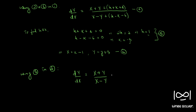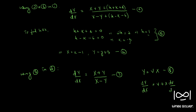Let's call this equation 7. Equation 7 is a homogeneous equation, as dY/dX can be written as a function of Y/X — dividing numerator and denominator by X confirms this. So we put Y equal to vX, calling this equation 8. Differentiating equation 8 with respect to X, we get dY/dX equal to v plus X·dv/dX. Call this equation 9.